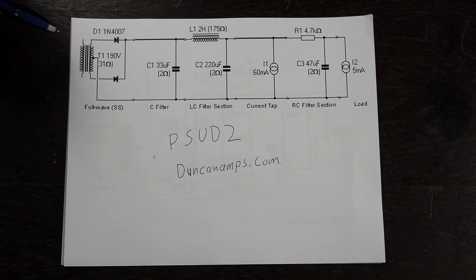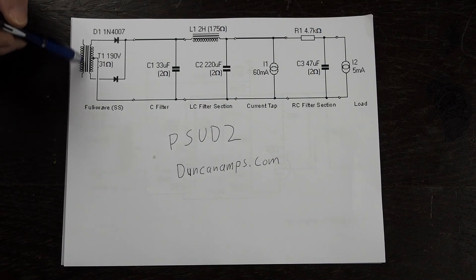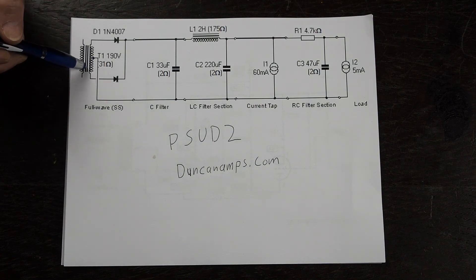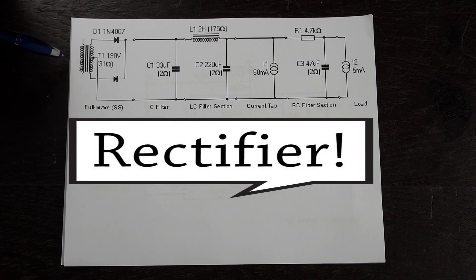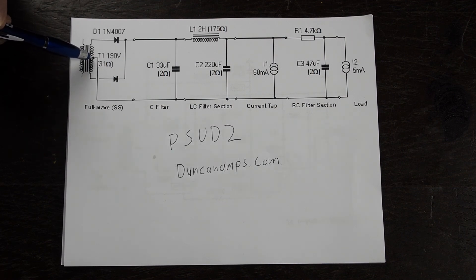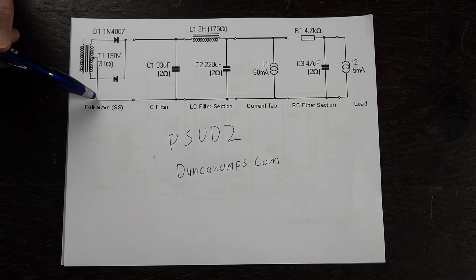We're going to start with the power supply. On this end is your 120 volt AC and it goes into this transformer which is a 380 volt center tap transformer. The way this works as a full wave solid state amplifier is the center tap of the secondary is connected to the ground.